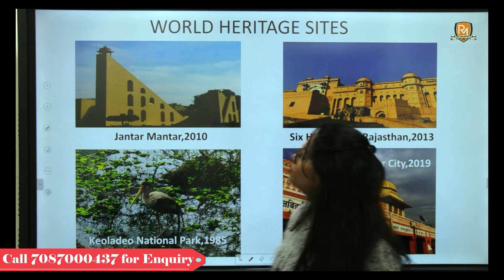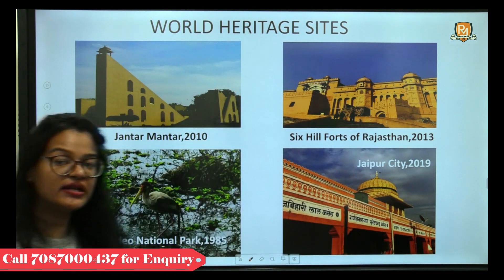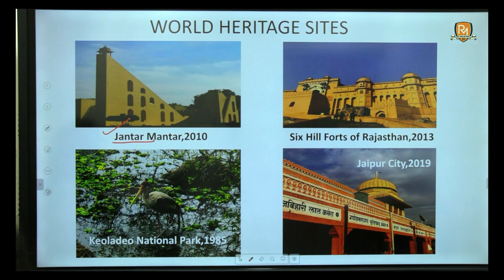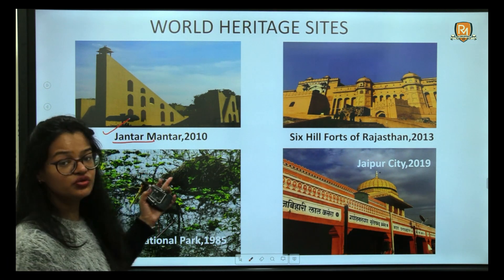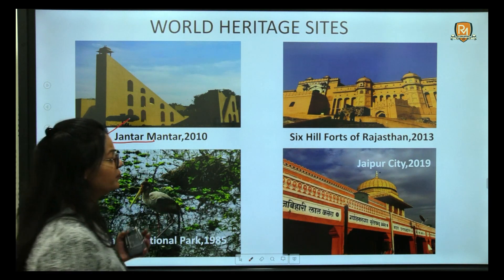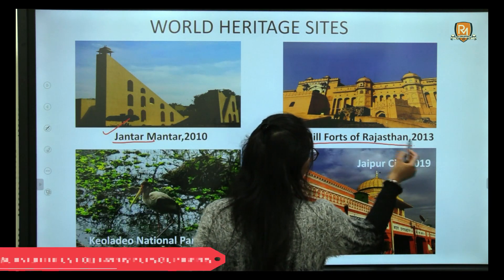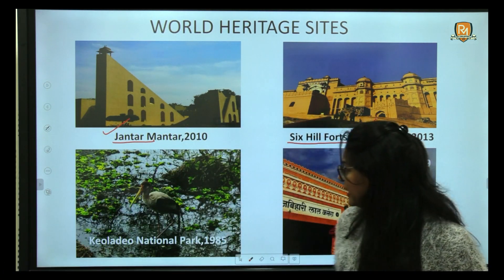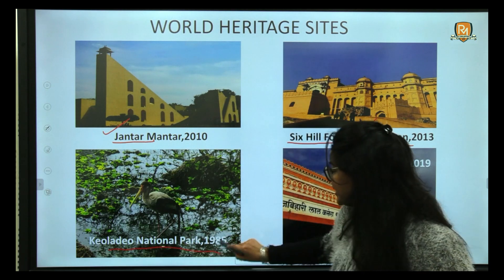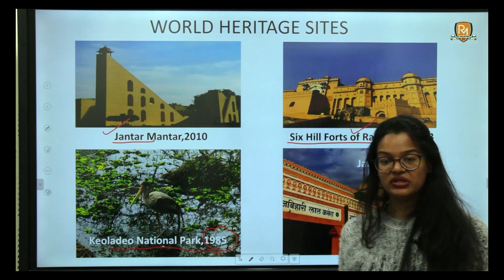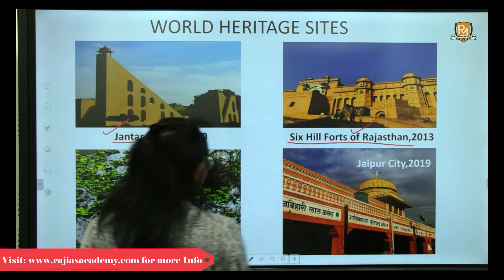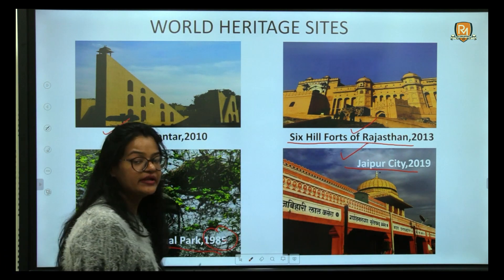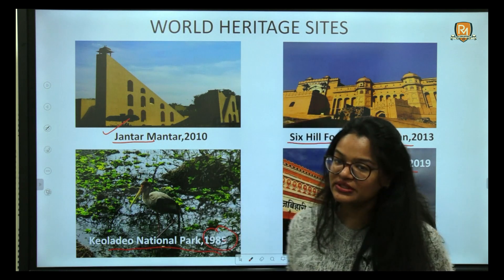Rajasthan's UNESCO World Heritage Sites include: Jantar Mantar (included in the UNESCO World Heritage Site list); the six hill forts of Rajasthan (included in 2013); Keoladeo National Park (included in 1985); and the walled city of Jaipur, which was added to the UNESCO list in 2019.